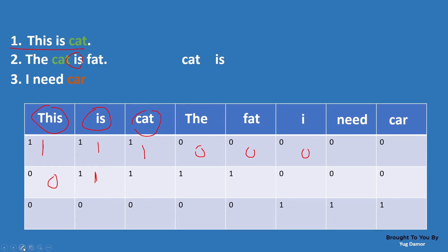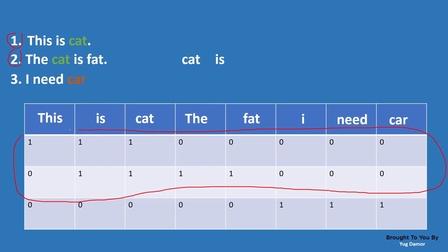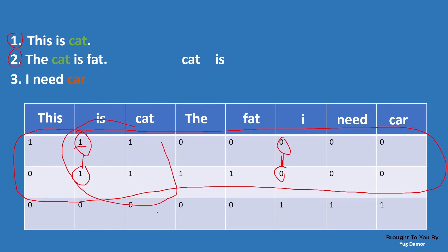Now if we want to see the similarity, first we will take sentences one and two. We check the numerical representation of each sentence. We look for positions where both sentences have a one — we do not count zero-zero pairs, because that means both sentences simply lack that word. If we encounter a one-one pair, we can say that these two sentences are similar.